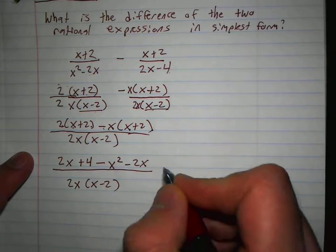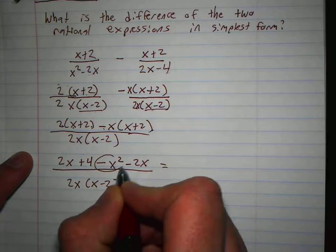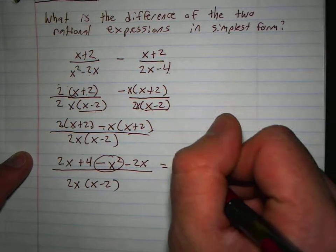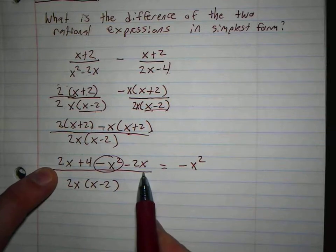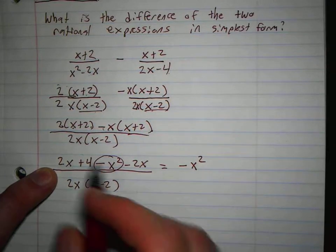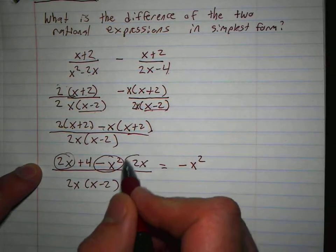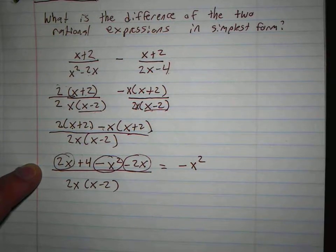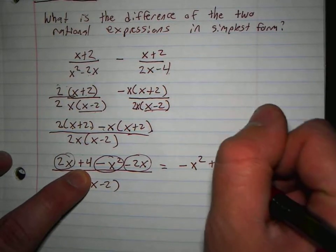So now, is there anything in the numerator that you can combine? Well, let's rewrite it. We have negative x squared. There's no other x squareds. 2x. 2x minus 2x is, those two make what? Zero. And I'd be left with a plus 4.